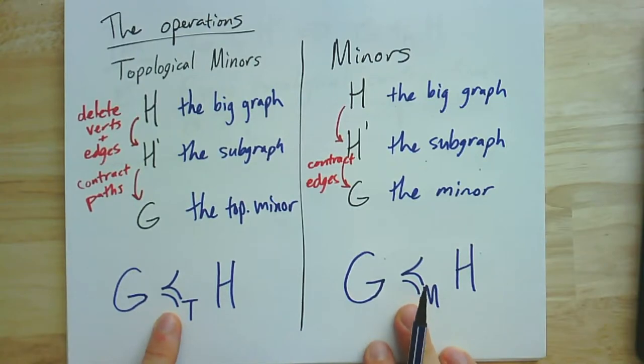So this symbol kind of indicating that we've got some partial order. We haven't actually proven that it's a partial order, but we will. And the subscript is just telling us which one it is, whether it's in terms of topological minors or minors more generally.